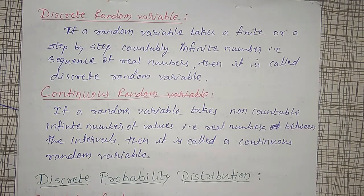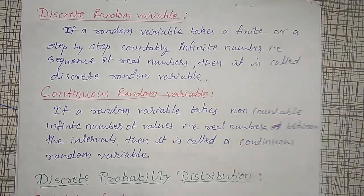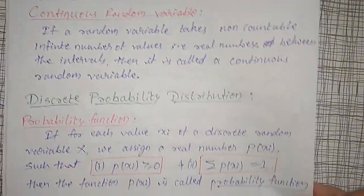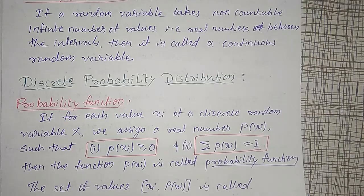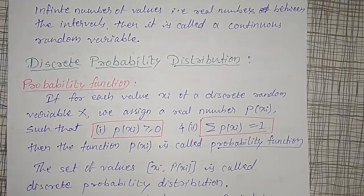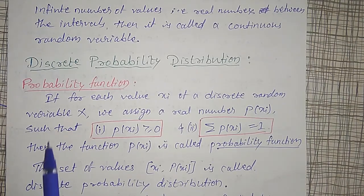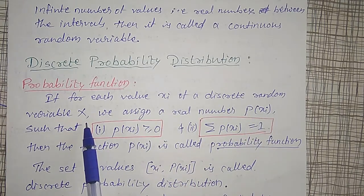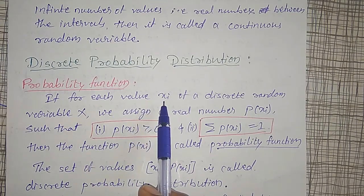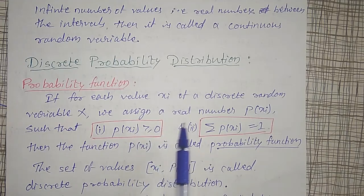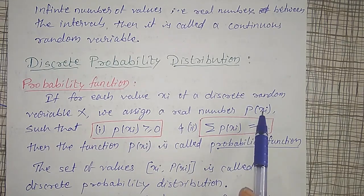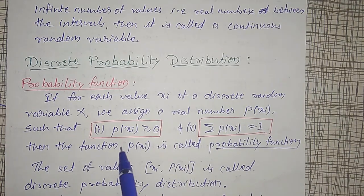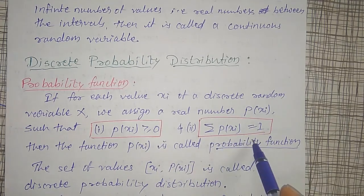This is the definition of random variable. Using that random variable I am going to discuss the discrete probability distribution. Before defining that, I have to define the probability function. For each value x_i of a discrete random variable X, if we assign a real number P(x_i) such that: each P(x_i) must be greater than or equal to 0, and the sum of all P(x_i) must be equal to 1, then that function P(x_i) is known as a probability function.